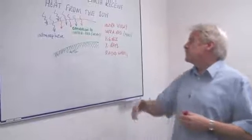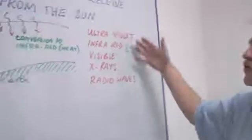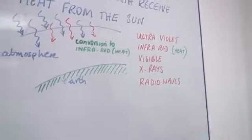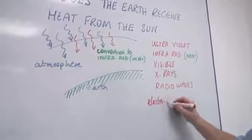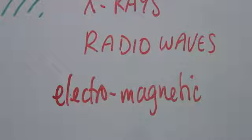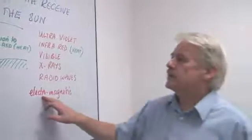And coming from the sun are various kinds of radiation: ultraviolet, infrared, visible, x-rays, radio waves. Of course, all of these are electromagnetic radiations. And light, visible radiation, light is just one of these electromagnetic radiations.